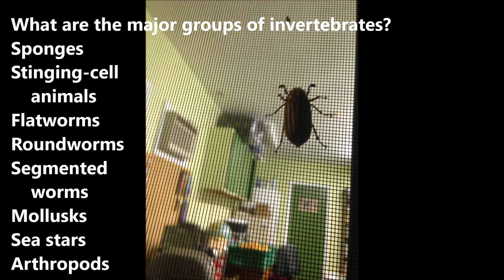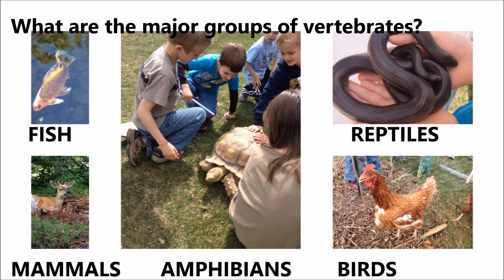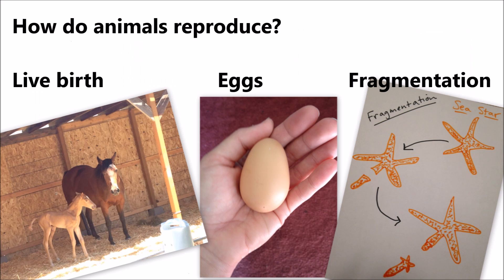And arthropods. What are the major groups of vertebrates? Fish, amphibians, reptiles, mammals, birds. How do animals reproduce?